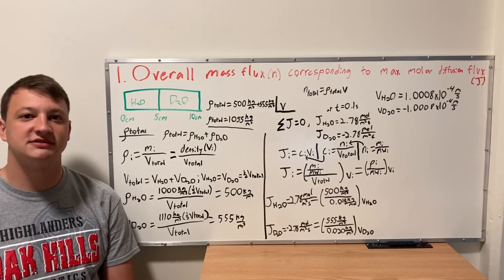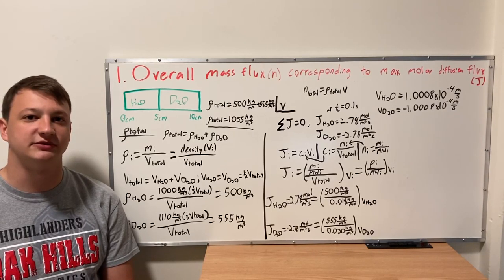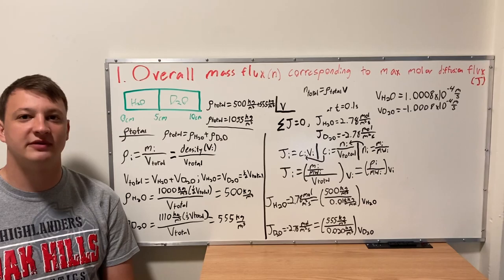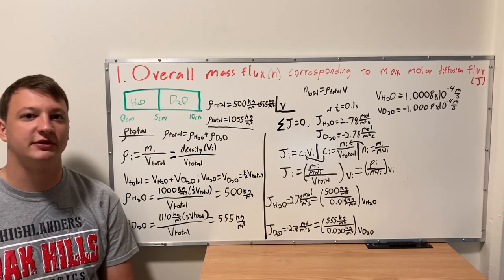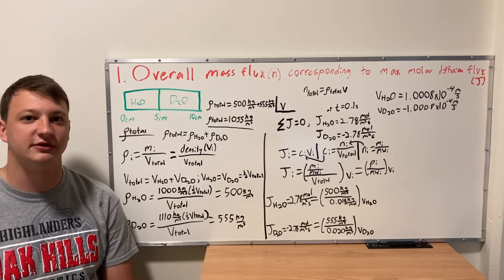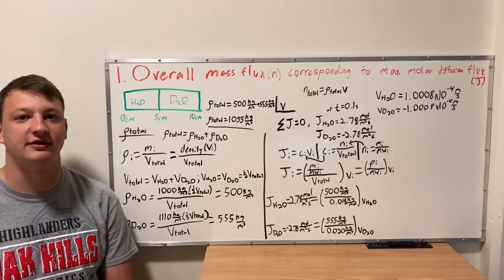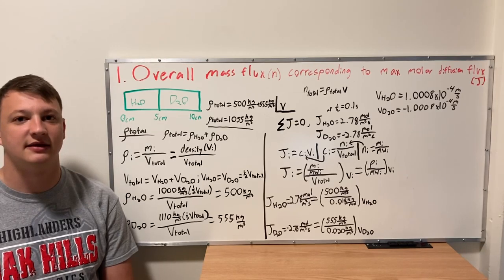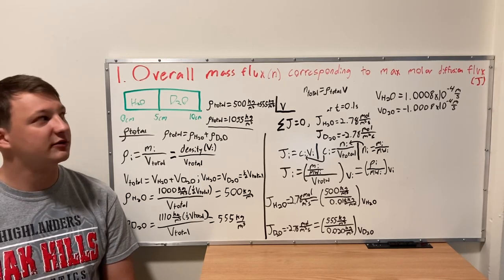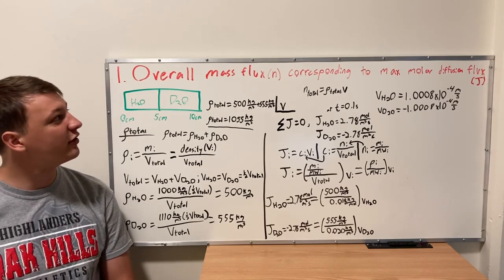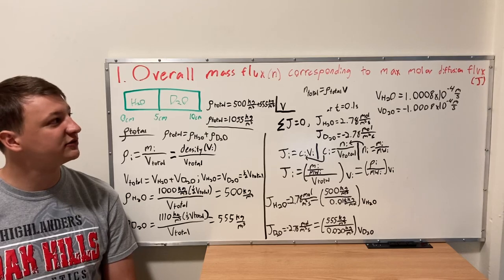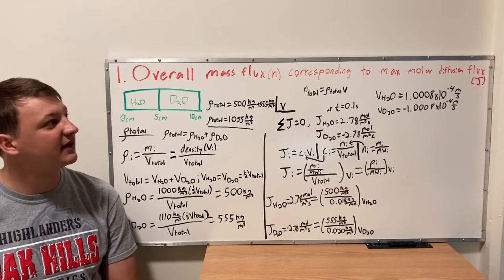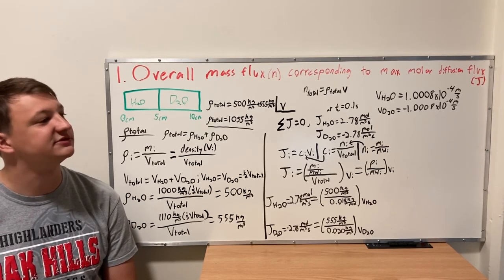Hello, I'm Neil Robertson doing Transport Two, Homework Number Two. In this problem we have a 10-centimeter long uniform capillary with pure H2O on the left side and pure deuterated water on the right side. For the first problem we're going to be looking at the overall mass flux corresponding to the maximum molar diffusion flux.